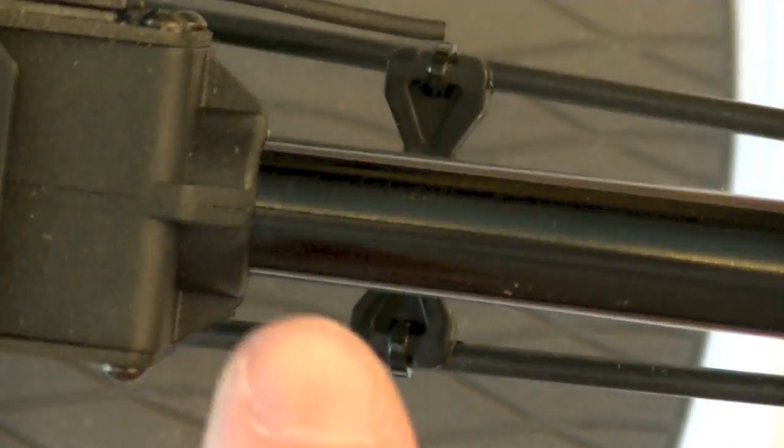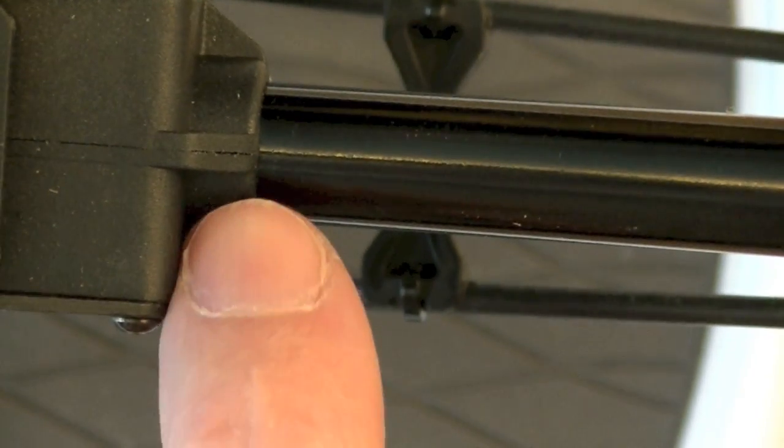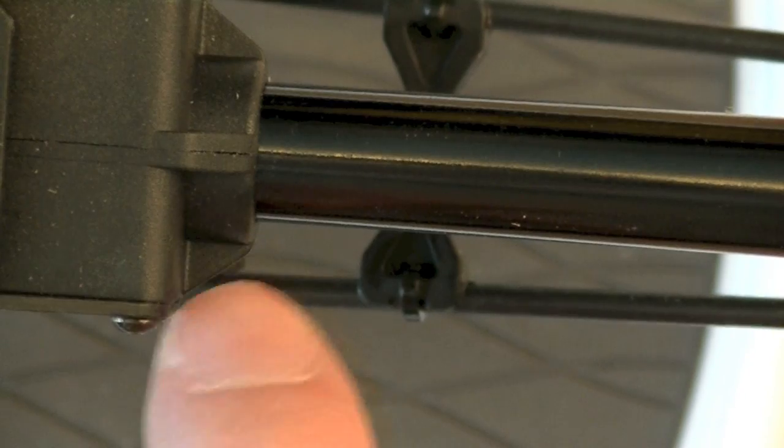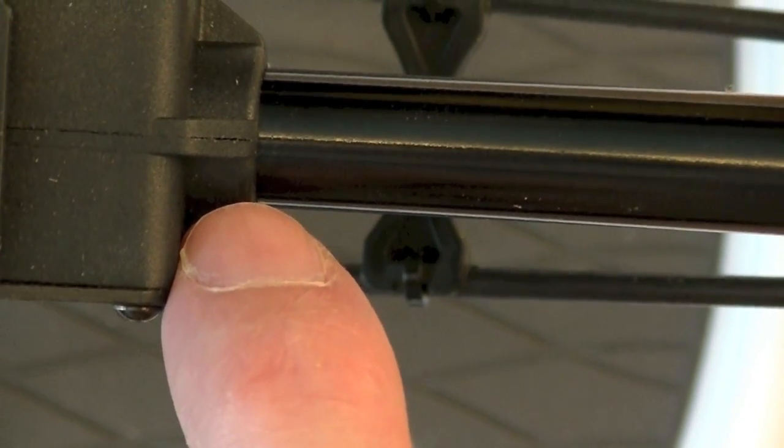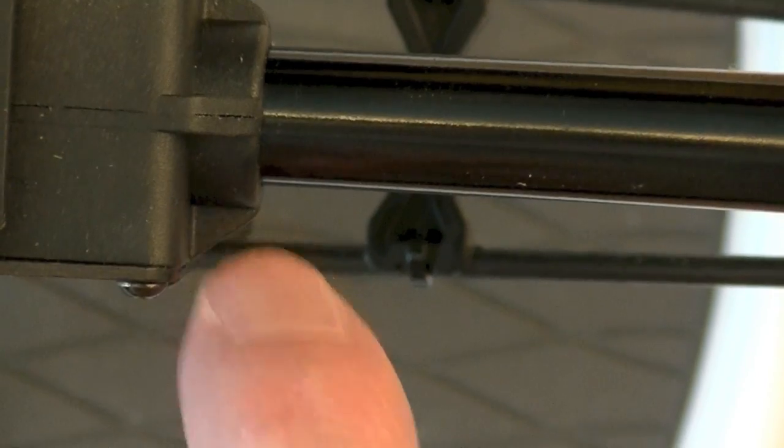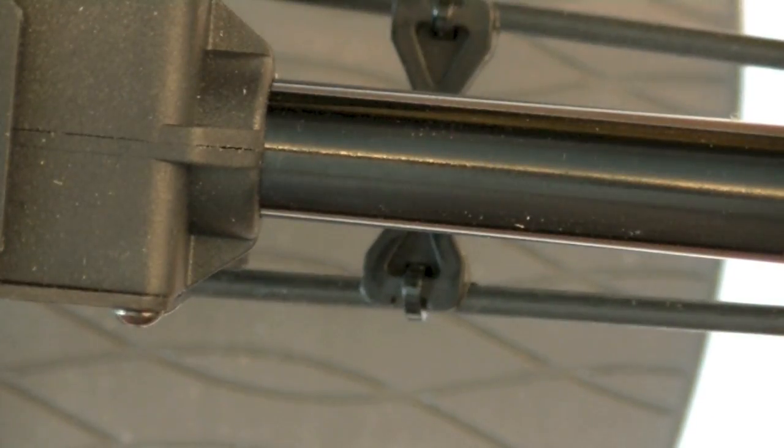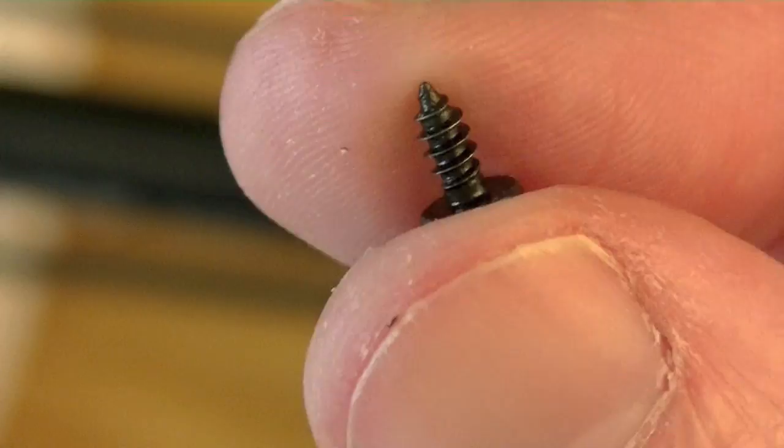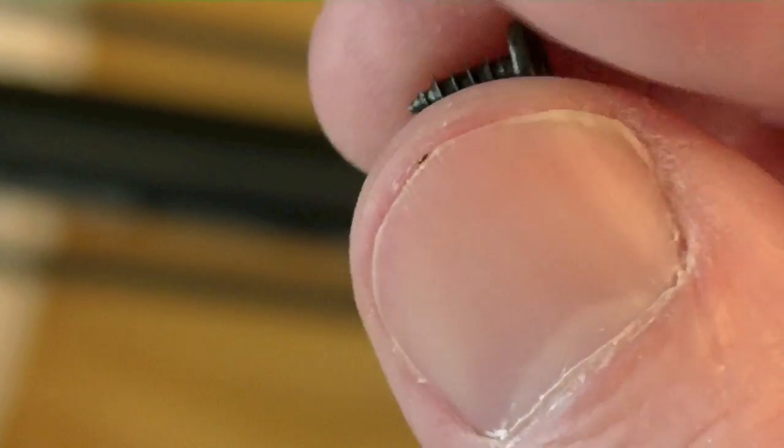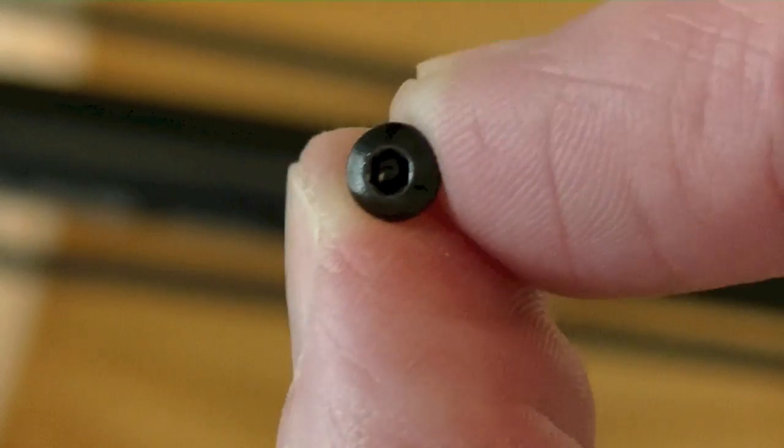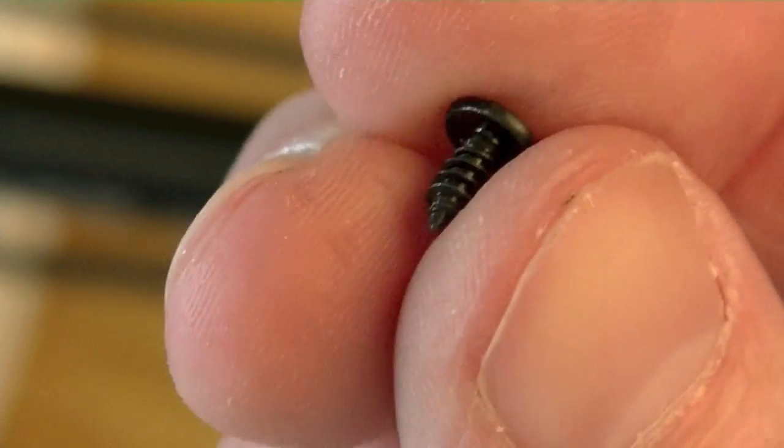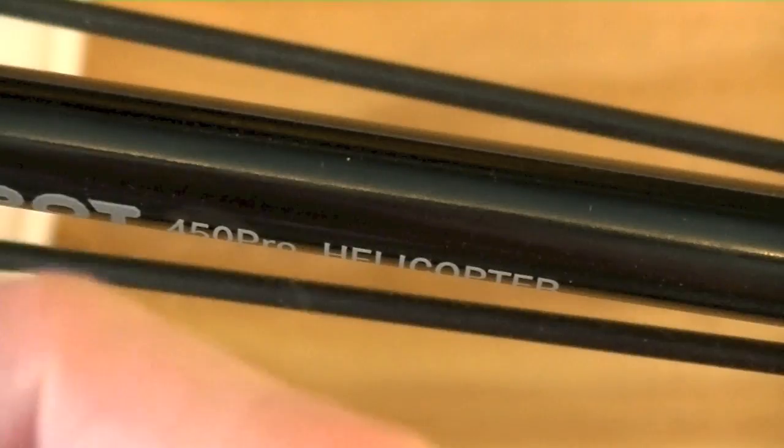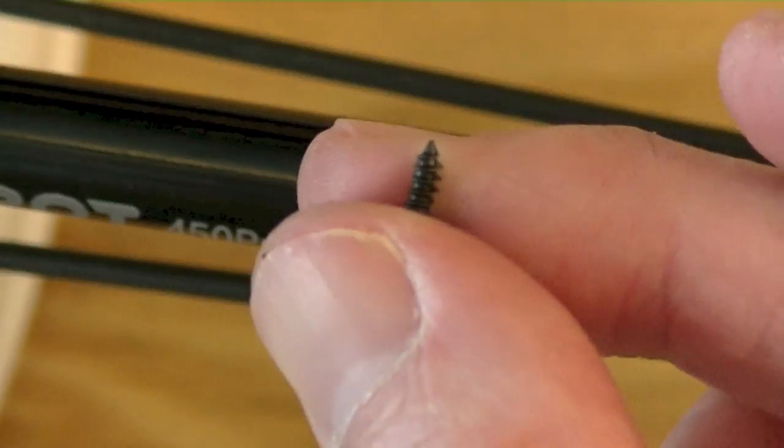And so what I am going to do is I am going to put a screw in here, the way Finless Bob describes. Basically drill a hole through this front block into the assembly. And I am going to use a little screw. I actually had one of these little screws laying around. It is the smallest one I could find. It is just a leftover screw from the build. I am going to use it.